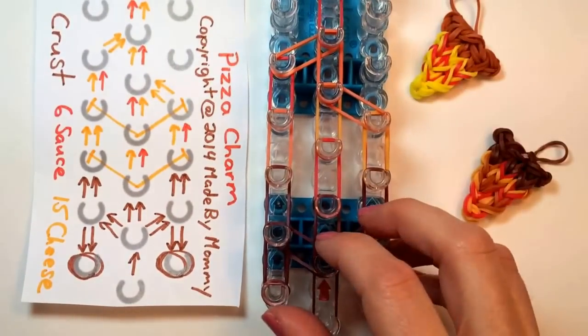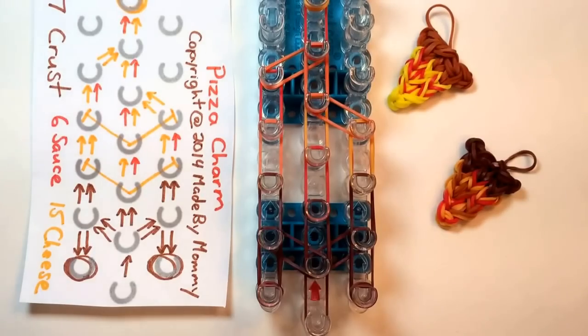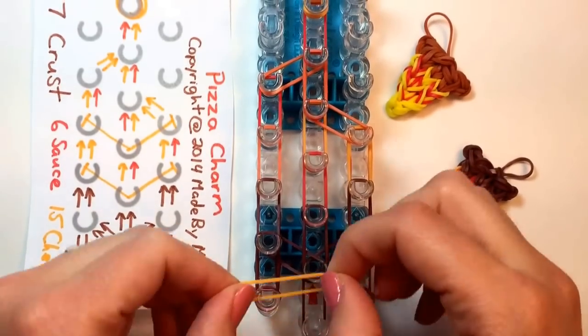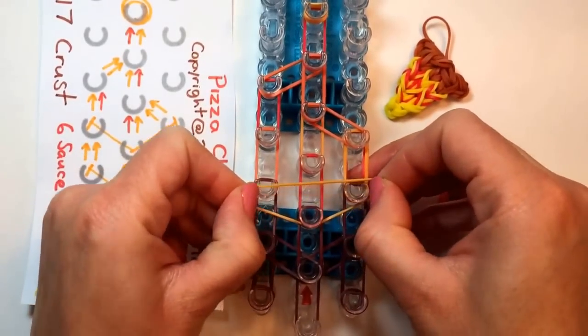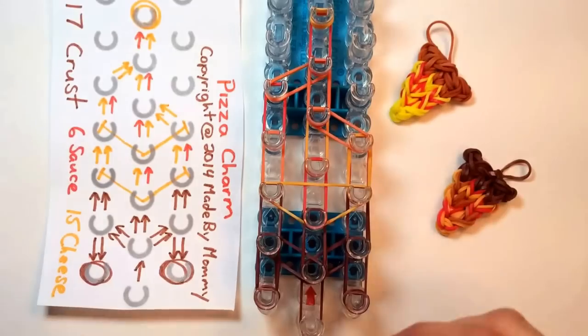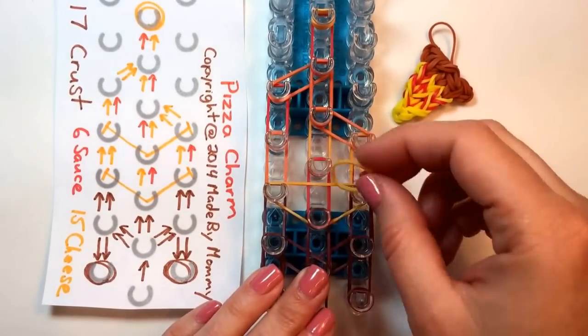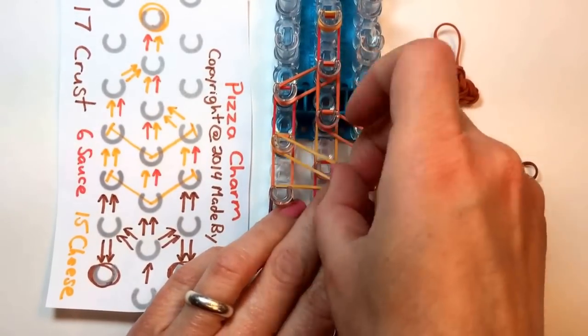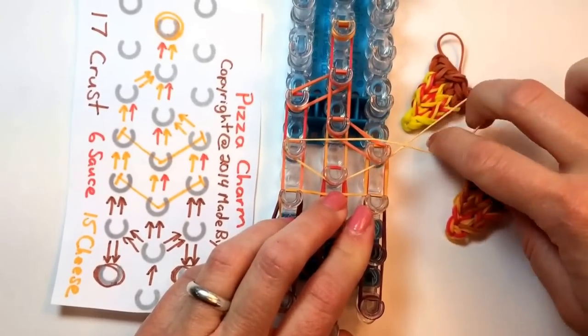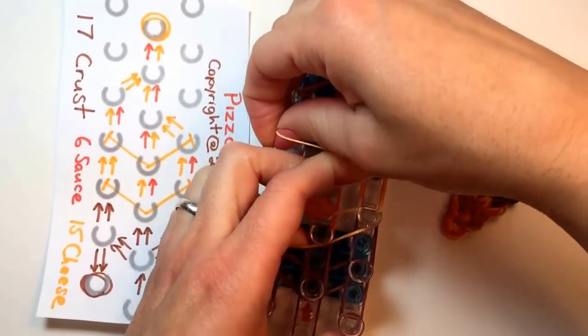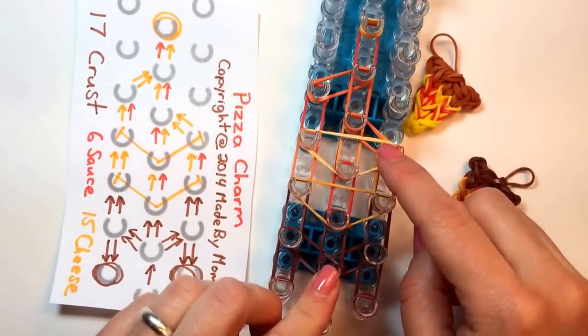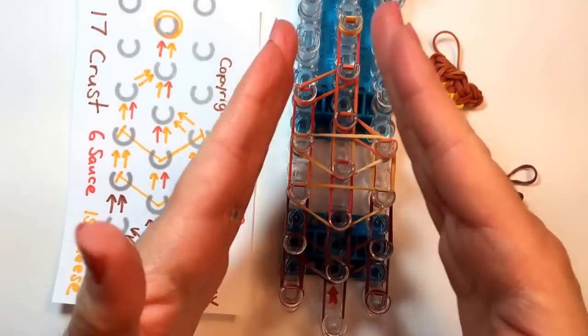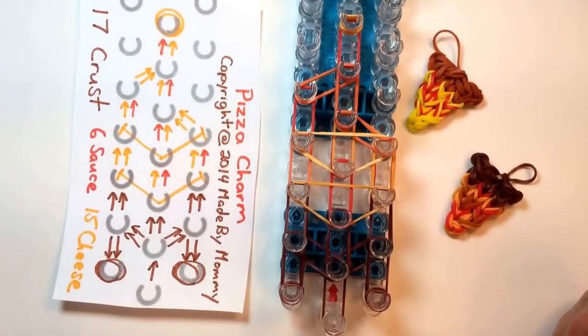And we just need to add two more bands. We're going to take a cheese colored band and place it around these three pegs like that. And then we're going to do the same thing around these three pegs. But this time, instead of just doing it once, we're going to stretch, twist, and fold it over so that it goes around those same three pegs twice. That helps create that real pizza slice shape. And that's all of the rubber bands you need to make your pizza.